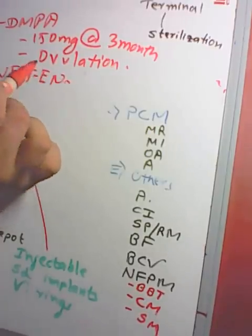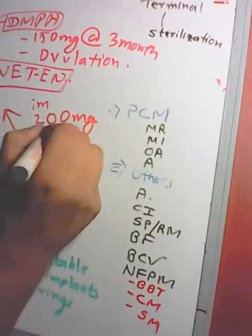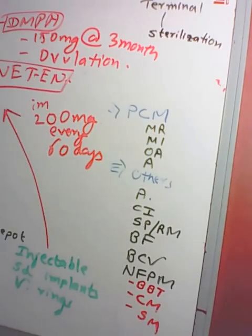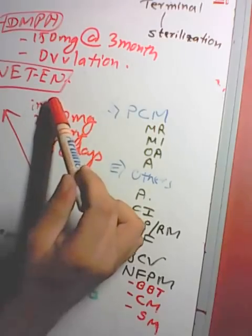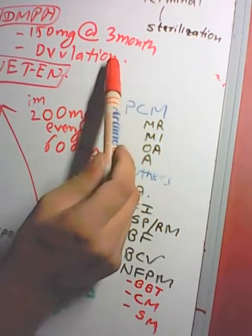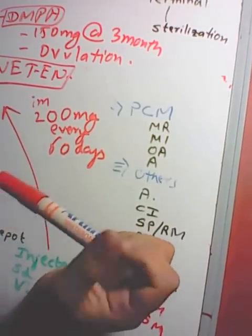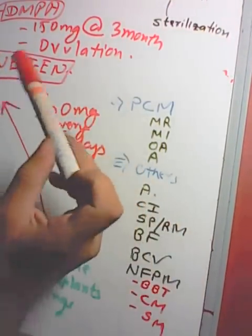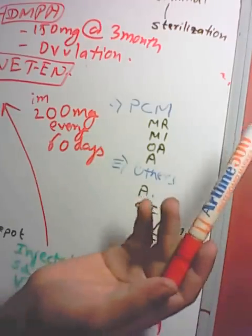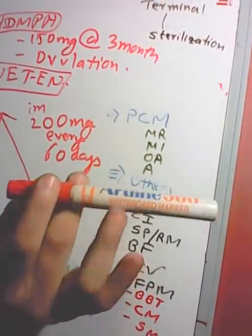Another injectable is Net-En (Norethisterone Enanthate), given intramuscularly as 200 mg every 60 days. Both DMPA and Net-En must be given within the first 5 days of menstruation. Both are given deep intramuscularly in the gluteus maximus. The injection site should never be massaged following the injection.